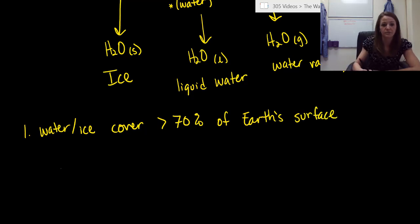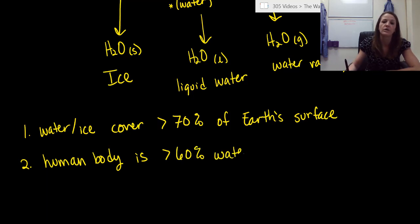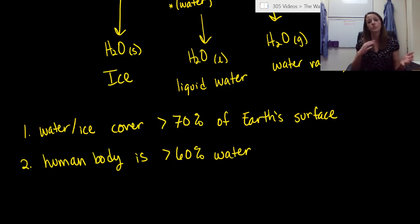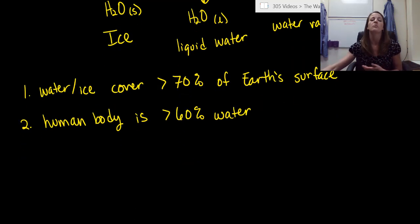You know what else is primarily water? The human body. So our second fact is that the human body is greater than 60% water. We say greater than 60% because it depends on each person — your gender, your height, your weight, and a lot of different factors. But on average, it's greater than 60%.